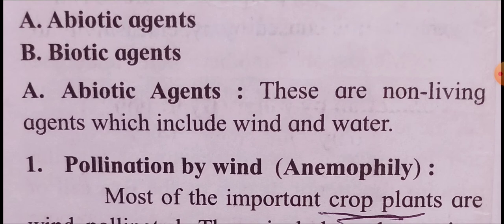Abiotic agents are non-living agents which include wind and water. 'A-bio' means not living. So these are non-living agents — non-living mediums through which pollination is carried out, using wind and water.